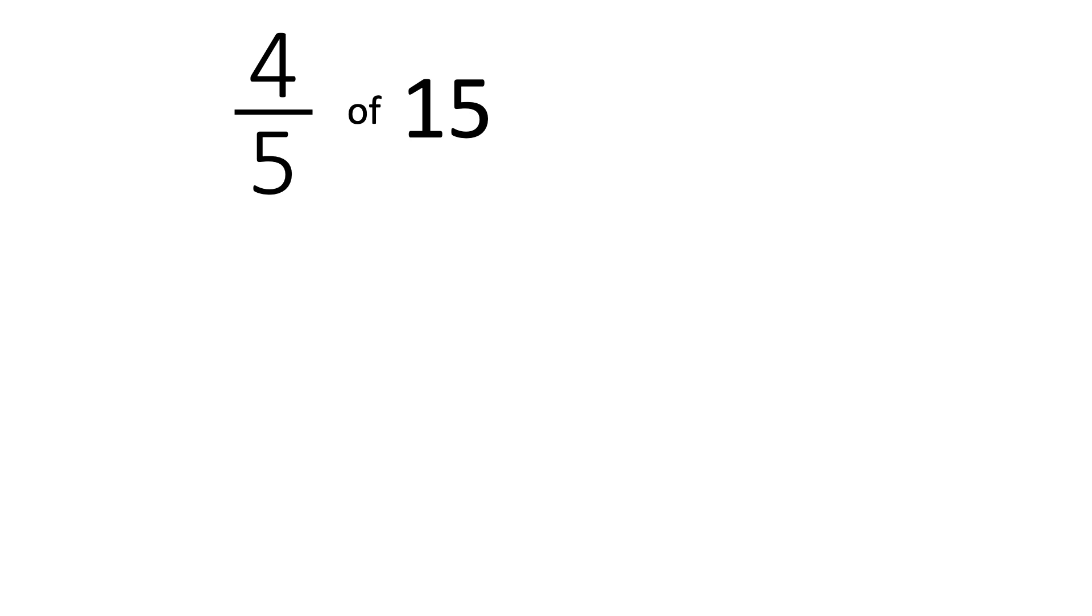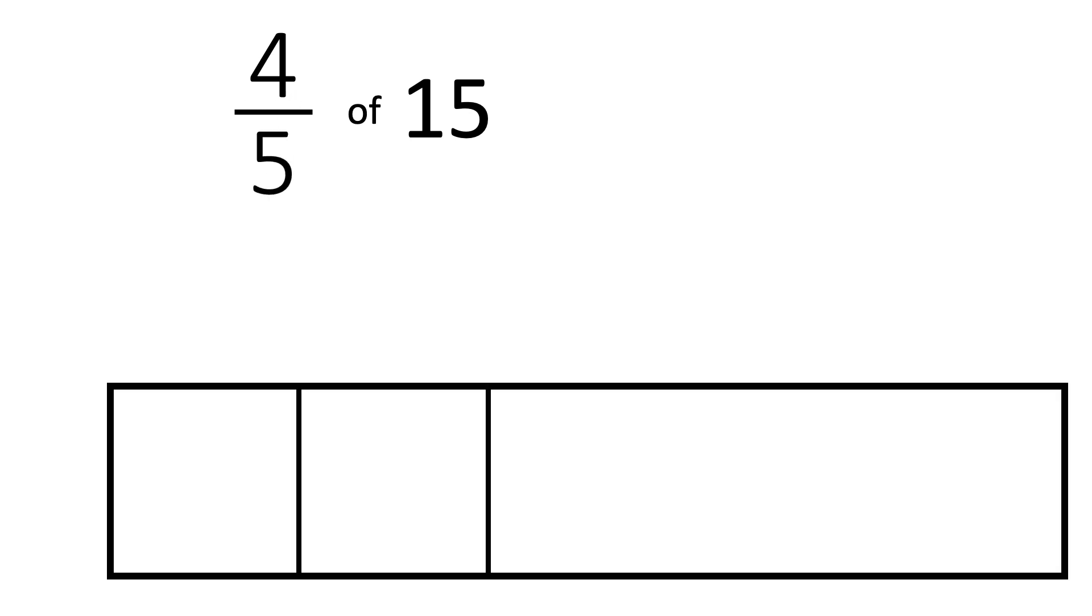To find four-fifths of fifteen, our denominator tells us to split our whole into five equal pieces. And this time, our whole amount is fifteen. So let's get fifteen counters.